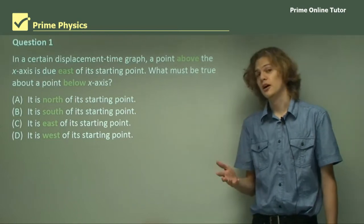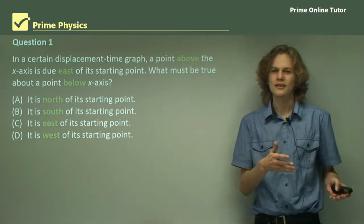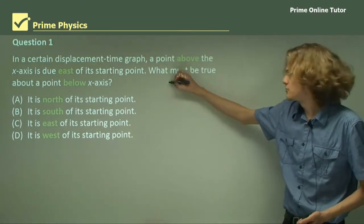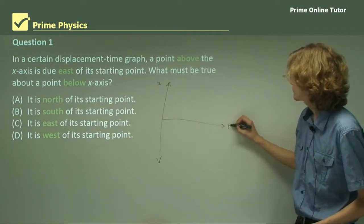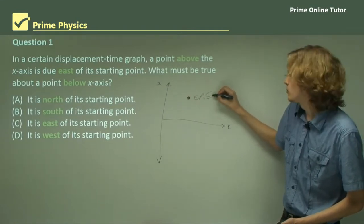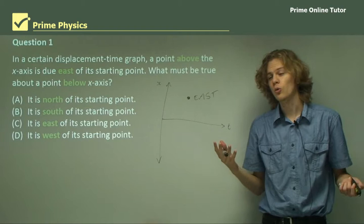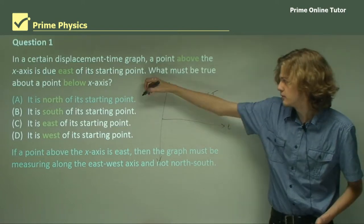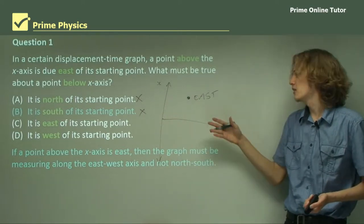Question 1. In a certain displacement time graph, a point above the x-axis is due east of a starting point. What must be true about a point below the x-axis? Well, let's draw a graph and find out. Here's a displacement time graph with displacement on the y-axis and time on the x-axis. The object that's above the x-axis is east of the starting point, so that means this axis must be graphing east and west rather than north and south.